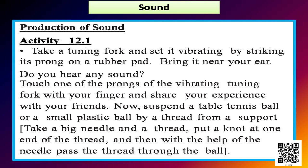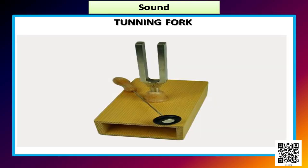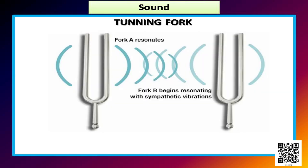Students, to produce a sound, an activity is given in your book — activity 12.1. It says: take a tuning fork and set it vibrating by striking its prong on a rubber pad. A tuning fork is an instrument which creates vibration when we strike it with something. You can feel that vibration when you touch it with your finger.